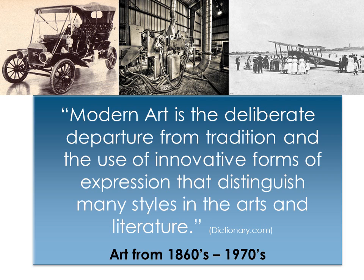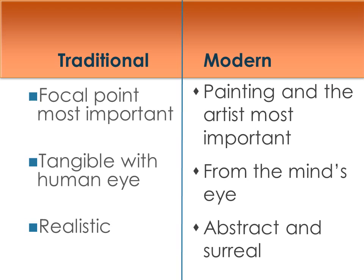To completely understand modern art, we need to first look at traditional art. Traditional art was different: traditional artists separated themselves from the piece, the focal point was clear and the most important thing in a painting. It was static, fixed, predictable, measurable, and realistic. The objects were something you could see tangibly with the eye, and therefore it had to be realistic.